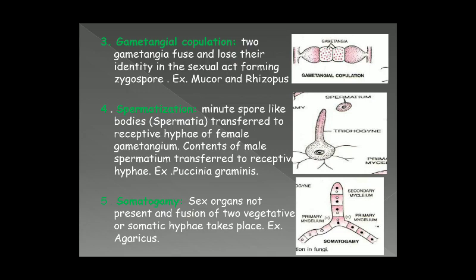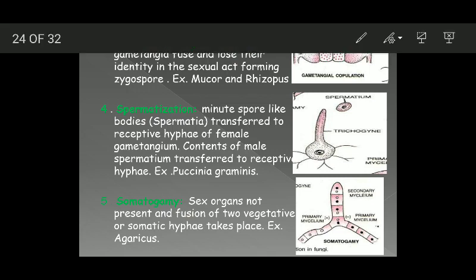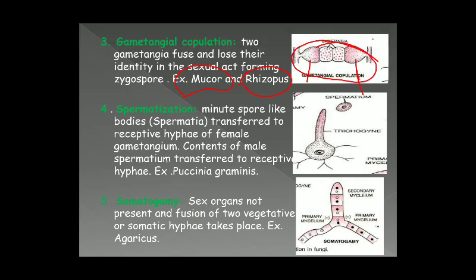The third mode of sexual reproduction in fungi is gametangial copulation. Here two gametangia fuse and they lose their identity in the sexual act, forming a structure known as a zygospore. Here you can see this occurs in Mucor and Rhizopus — the two gametangia come close to each other, fuse, their contents mix, they lose their identity, and the resulting structure is a zygospore, which later undergoes meiosis.